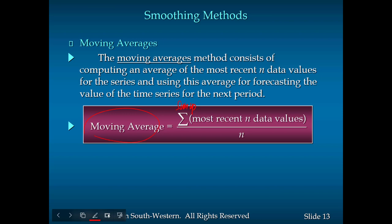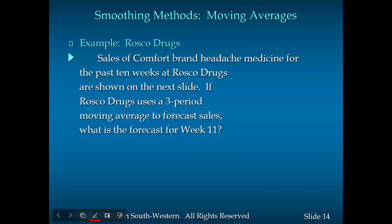The moving average is computed by taking the average of the most recent n data values: sum up the most recent n data values and divide by n. For example, a 3-period moving average means summing the most recent 3 data values and dividing by 3.